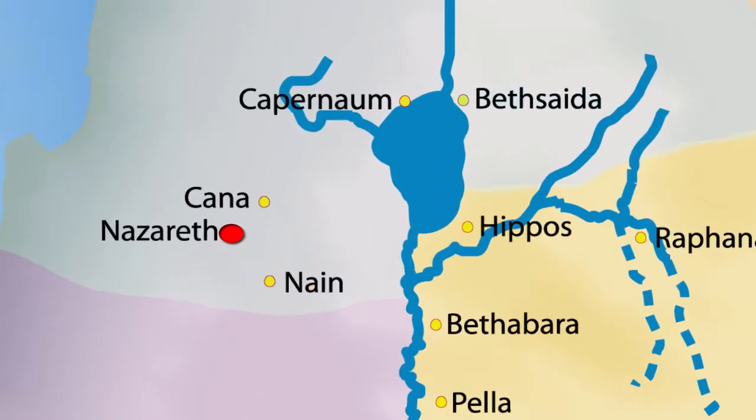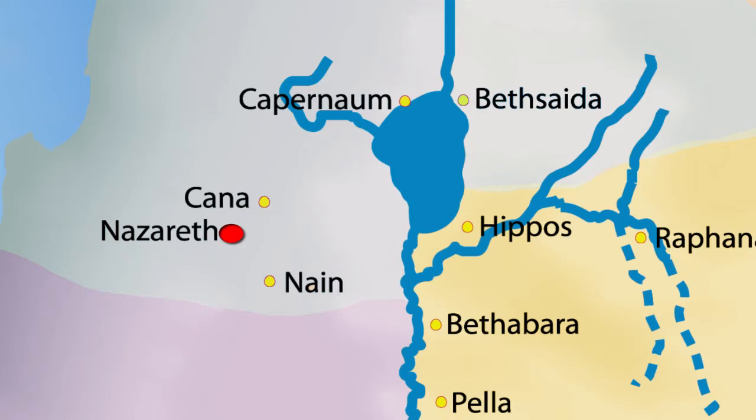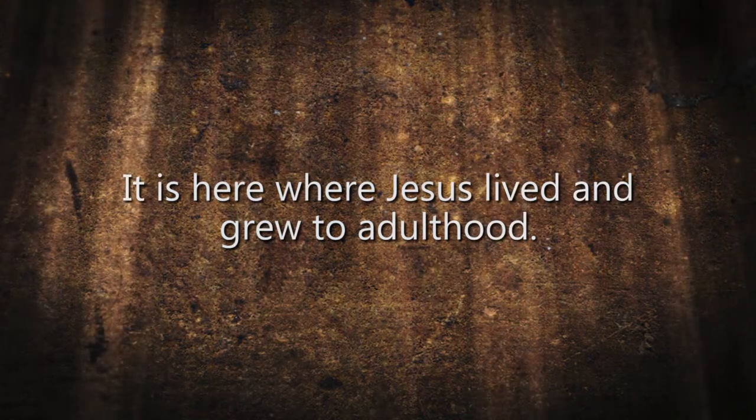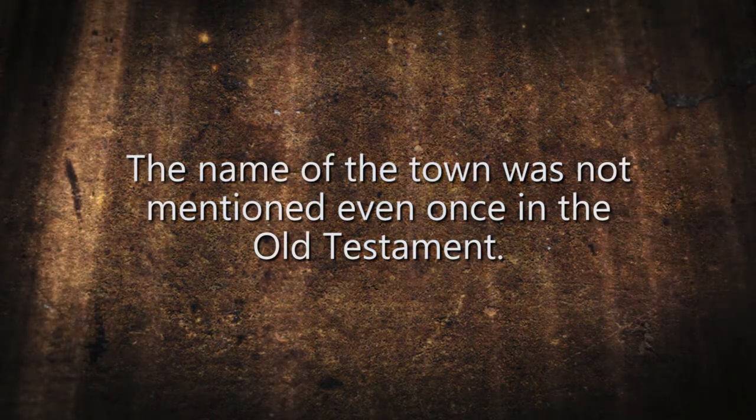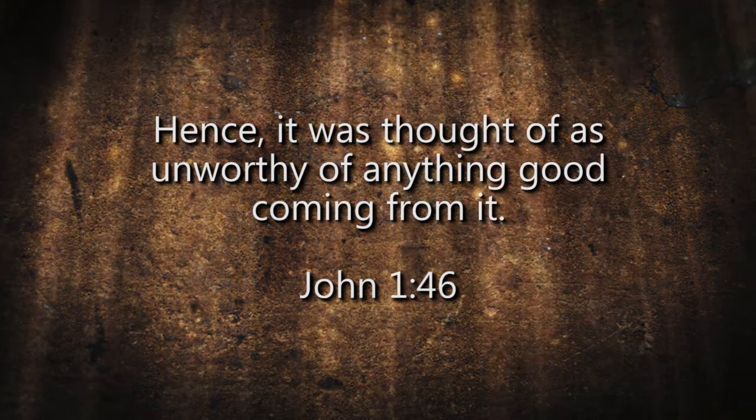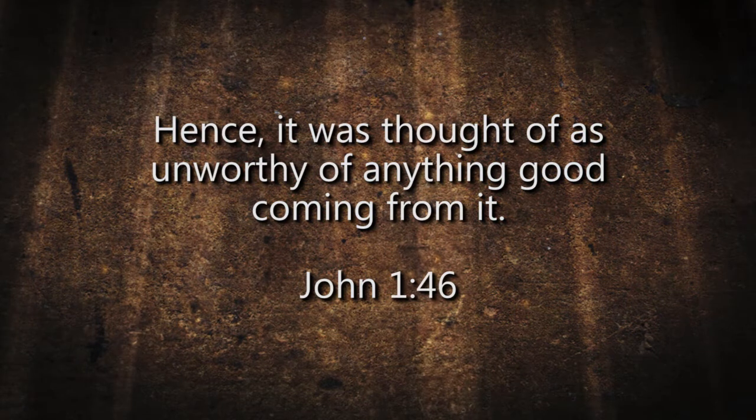Nazareth was a turning point during Jesus' ministry. It was the home of Joseph and Mary, where they settled when they returned from Egypt after the death of Herod the Great (Matthew 2:19–23). It is here where Jesus lived and grew to adulthood. Nazarenes were lightly esteemed by other Jews in the Galilean region because it was just six kilometers away from Sepphoris, which was the Roman capital in Galilee. This means that most of the workers and servants of the Roman oppressors were people of Nazareth. The name of the town was not mentioned even once in the Old Testament, hence thought of as unworthy of anything good coming from it (John 1:46).